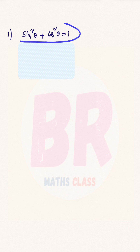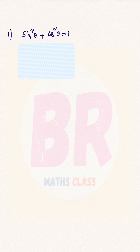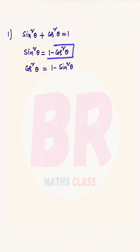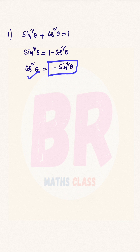The first trigonometric identity is sin²θ + cos²θ = 1. From this, we will get 2 more trigonometric formulas. One is sin²θ = 1 − cos²θ, and cos²θ = 1 − sin²θ.